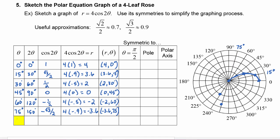The next angle is 90 degrees. When we double that we get 180 degrees. The cosine of 180 degrees is negative one, so r equals four times negative one, which is negative four. Our polar coordinate point is (−4, 90°). On the graph we start at the pole, point our face towards 90 degrees, and back up by 1, 2, 3, 4. Let's connect these points.